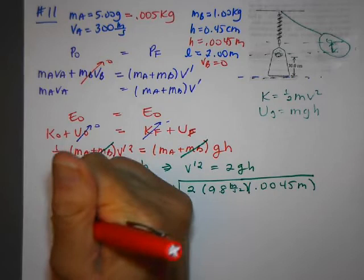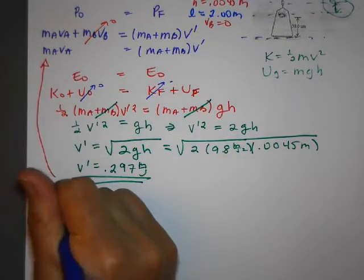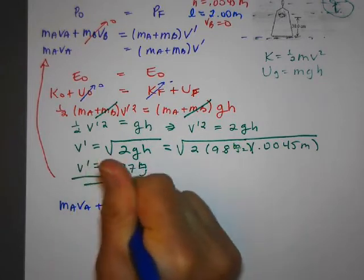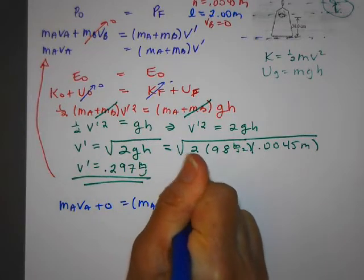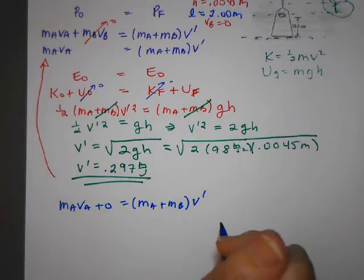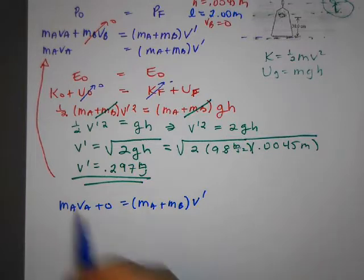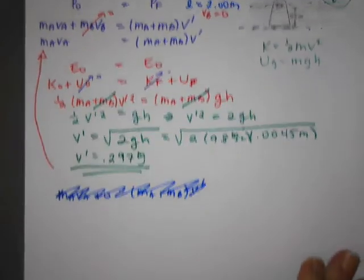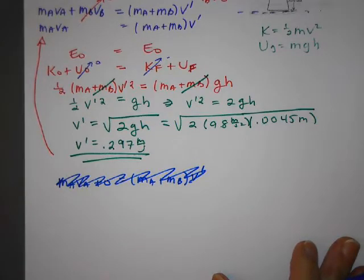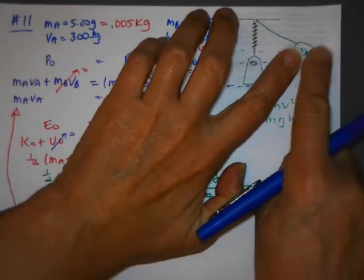And once I have this, now I can go back to my conservation of energy, which I had in the beginning, and rearrange this equation here. So I'll just write it over: MA·VA plus 0 is (MA + MB) times V prime. And now, I was reading the problem wrong. So now we're going to end up finding the velocity of the bullet after it goes through. So now the third part of the problem is, okay, now we're up here. Now I have this. Now the bullet goes out of the block.